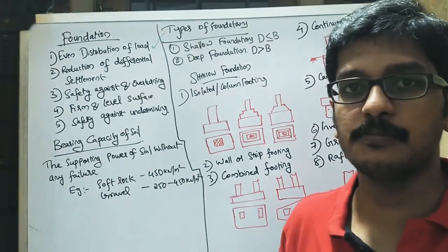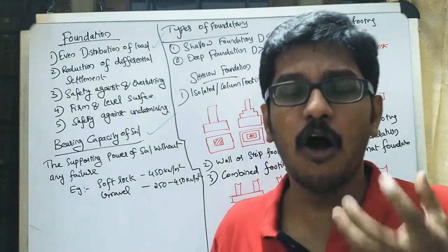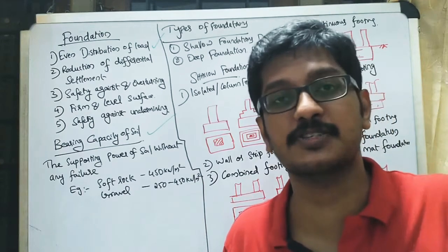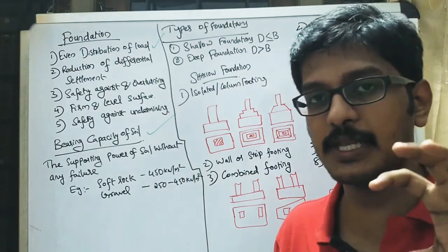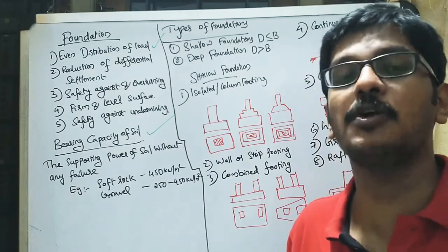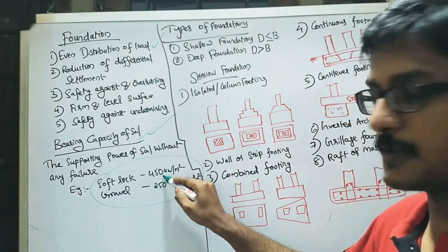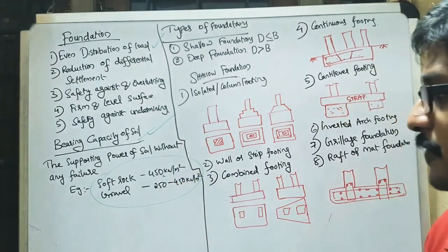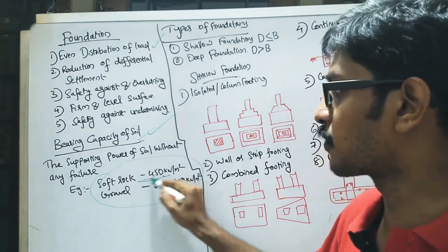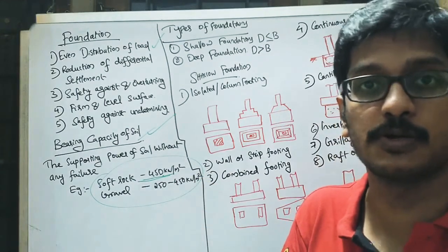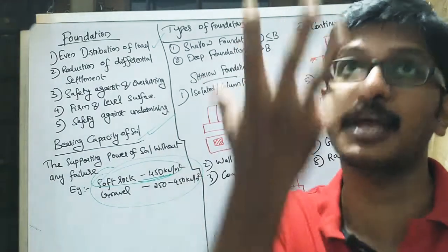Another important term related to foundation is bearing capacity of soil — how much load the soil can withstand for any building or construction. It refers to the supporting power of soil without any failure. For example, soft rock has a bearing capacity of 450 kN/m², and gravel has 250 to 450 kN/m². Soft rock can hold the maximum load, making it very good for construction.